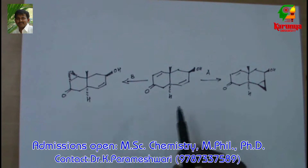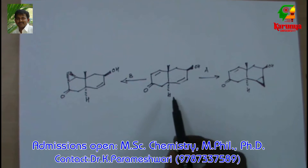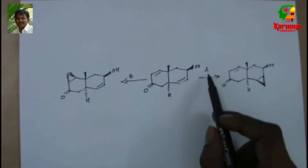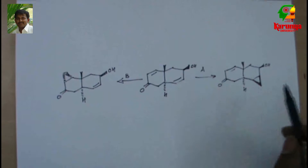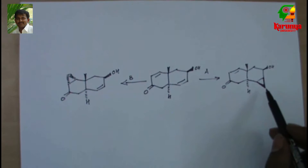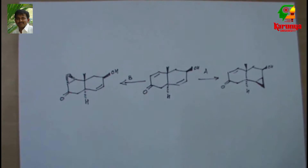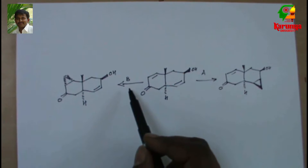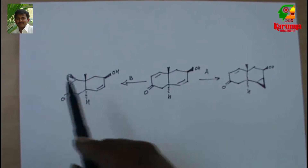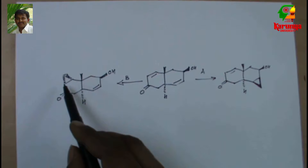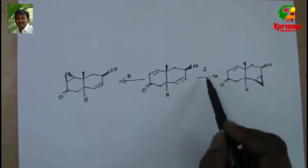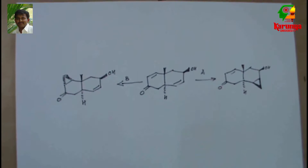When this compound is treated with A, it gives this cyclopropane. The same compound when treated with B gives cyclopropane at this position. What is A and B?